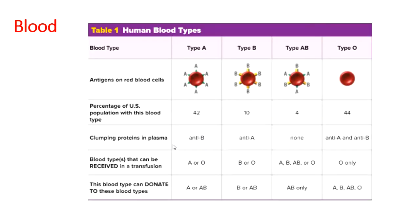Blood circulates through vessels and has several parts. The liquid part of blood is called plasma and contains nutrients, water, and carbon dioxide. Blood also contains red blood cells, platelets, and white blood cells. Red blood cells carry oxygen, platelets help the body heal when you get a cut, and white blood cells help the body defend itself from toxins and diseases.